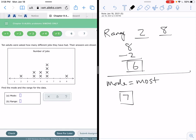All right, now 10 adults were asked how many different jobs they have had and the answers are shown. So that means one adult has only had two jobs.